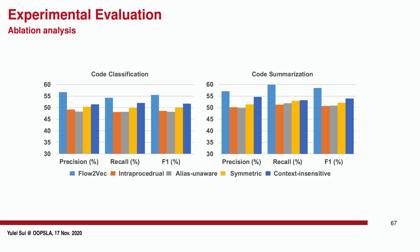We also conducted ablation analysis to evaluate each of the four important properties in flow-to-vec, namely interprocedural analysis, aliases, asymmetric transitivity, and context sensitivity, to further understand their contribution to the final accuracy of the two tasks. Overall, flow-to-vec with four properties combined performs better than when one of its properties is disabled, with an improvement ranging from 3.7% to 7.8% in terms of F1 score. It also demonstrates the usefulness of all four properties when producing the final code representation.